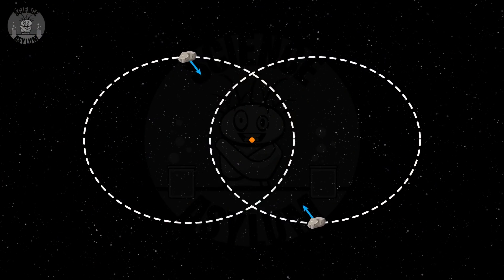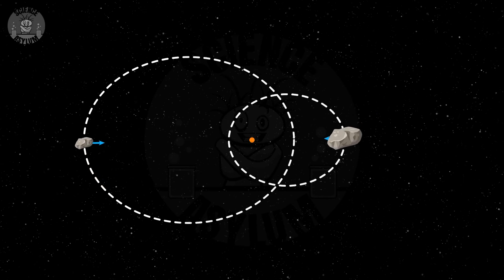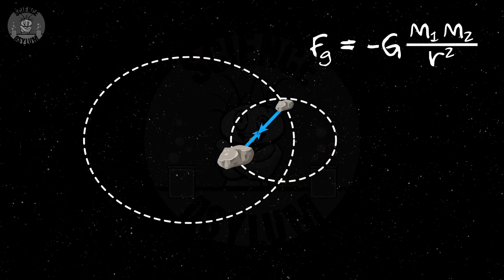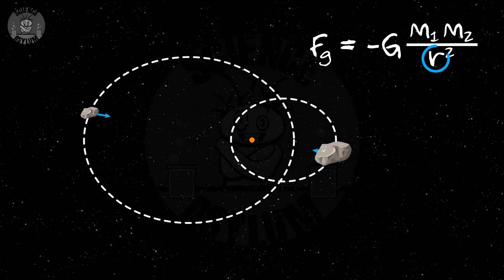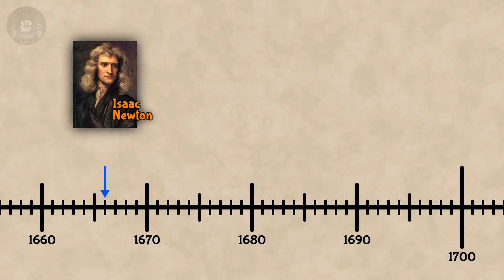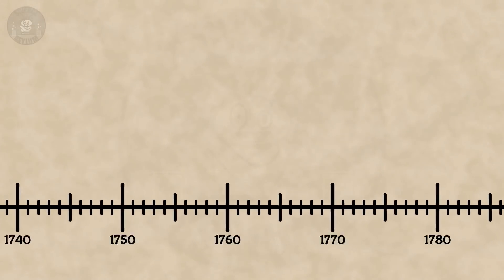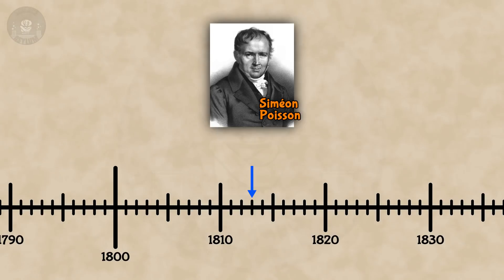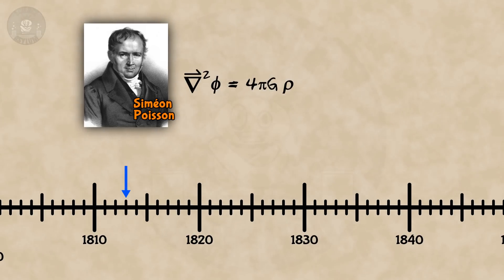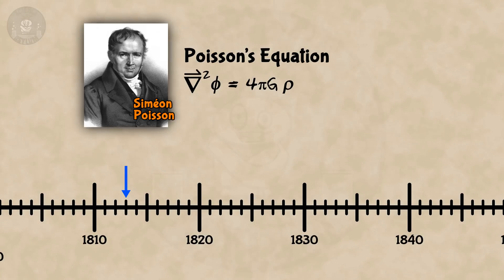Say we've got two rocks floating in space — each one has a mass, maybe one is bigger than the other. Newton says they each experience a force related to both of their masses and the distance between them. Forces aren't actually that useful for deeper understanding though. We've found that writing laws in terms of energy instead makes them look less ugly. Newton's law of gravity was developed in the 1660s, but in 1813, Siméon Poisson came up with an equation we now call Poisson's equation, which transforms Newton's force law into an energy law.